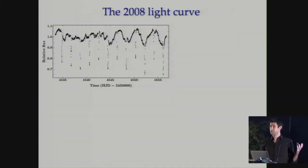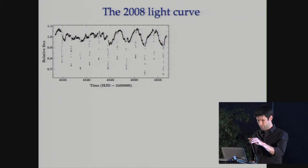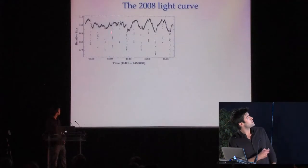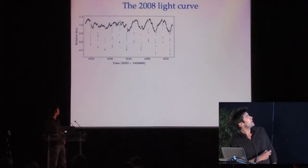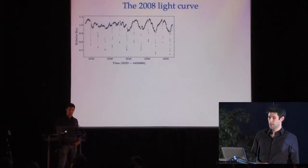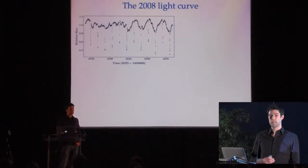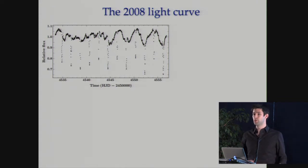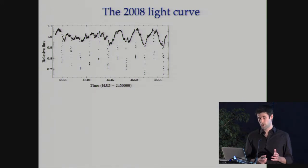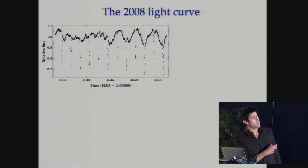This is the CoRoT light curve of the system I'm going to be talking about. You can see relatively deep eclipses on both the primary and secondary stars, but what I want to draw your attention to is this rather unusual out-of-eclipse variability. The amplitude and evolutionary timescale of this variability is very difficult to reproduce with just star-spot modulation alone. I'll come back to this later, but for now I want to focus on the eclipses themselves.